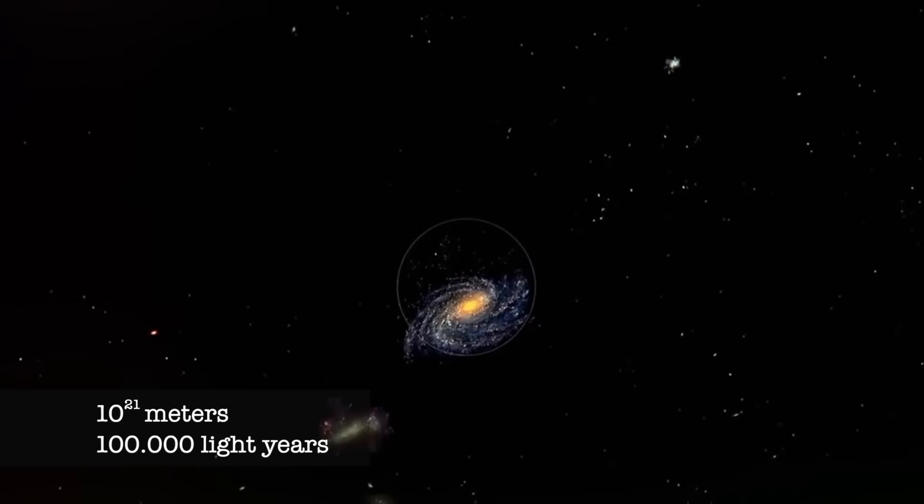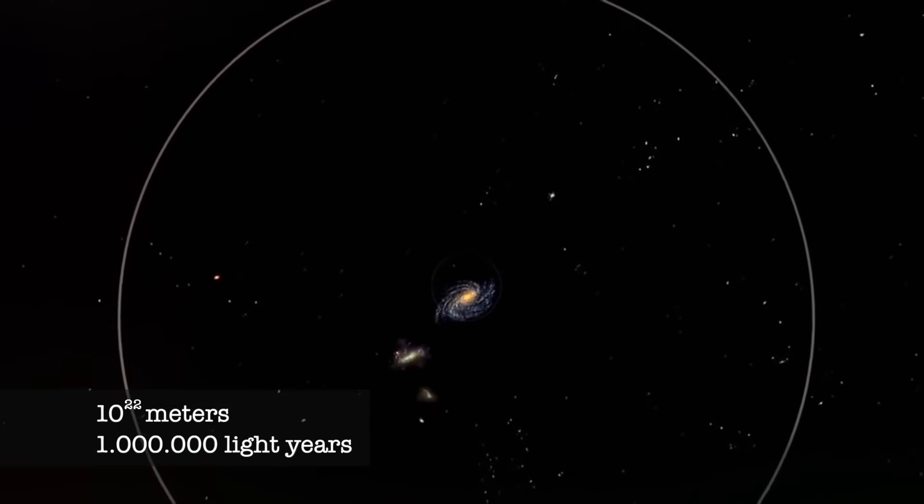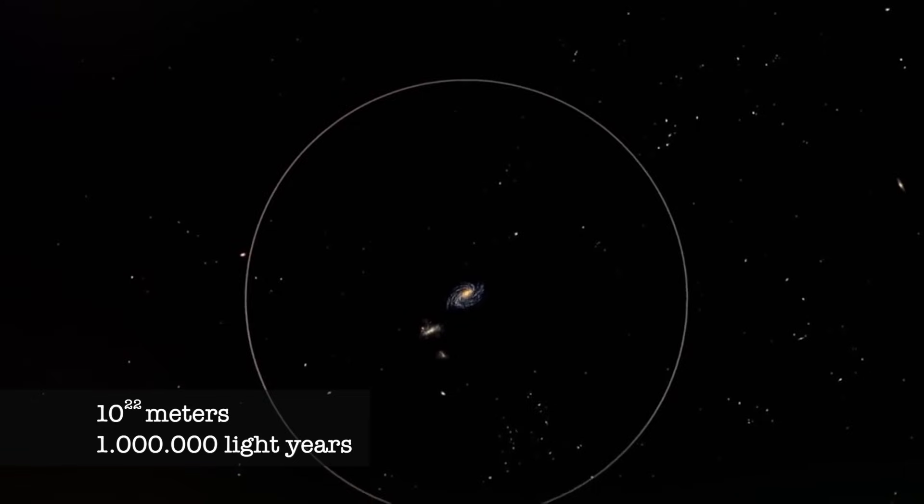The Milky Way is actually a spiral galaxy, and our own sun is just one of 100 billion stars.